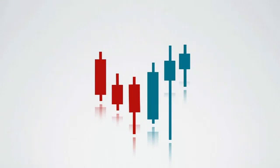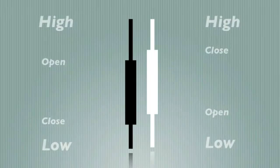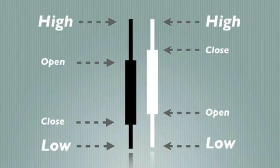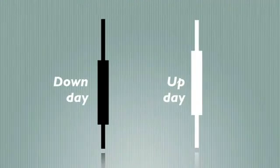Each candlestick is defined by the four price points, namely the opening, closing, highest and lowest prices in the timeframe. With a candlestick, you can tell which is the opening price and which is the closing price. If the close is higher than the open — in other words an up day — then the real body is one colour, normally white. If the close is lower, then the real body is another colour, usually black.